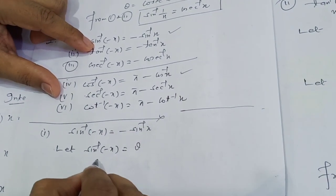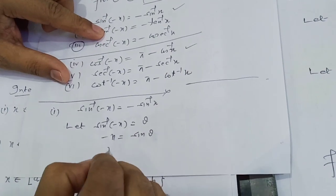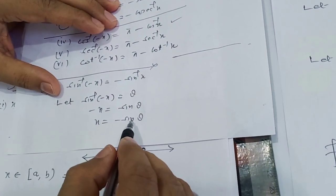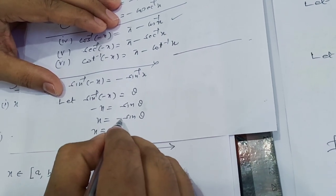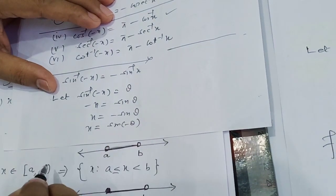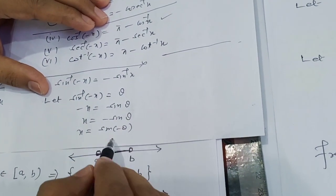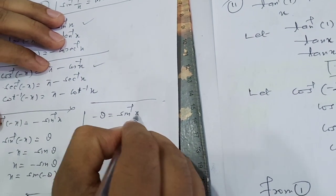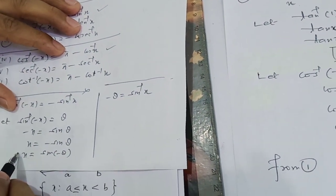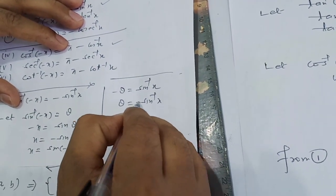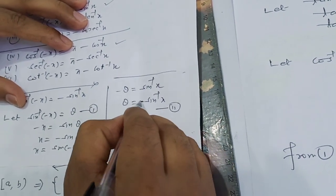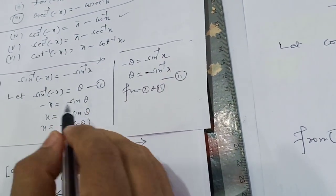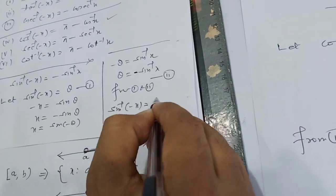Verifying sin⁻¹(-x) = -sin⁻¹(x): let sin⁻¹(-x) = θ, so -x = sin θ, meaning x = -sin θ = sin(-θ), because sin(-θ) = -sin θ. Therefore -θ = sin⁻¹(x), giving θ = -sin⁻¹(x). From both expressions we conclude that sin⁻¹(-x) = -sin⁻¹(x).